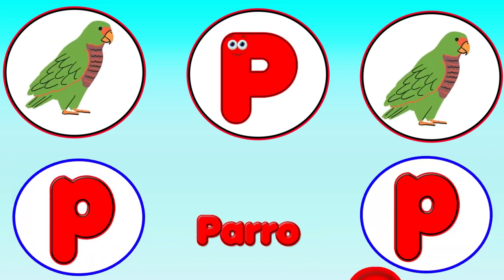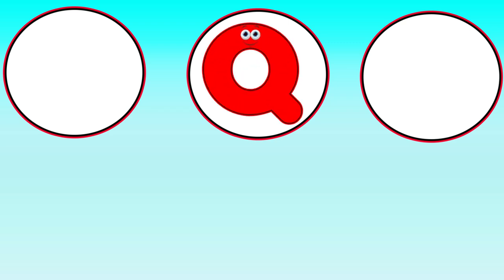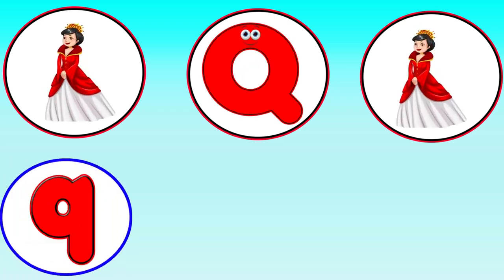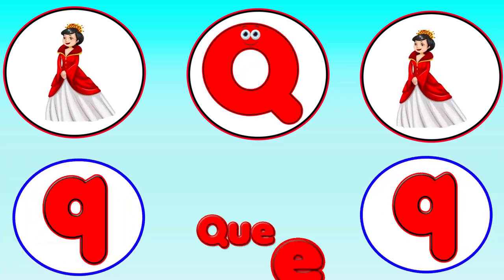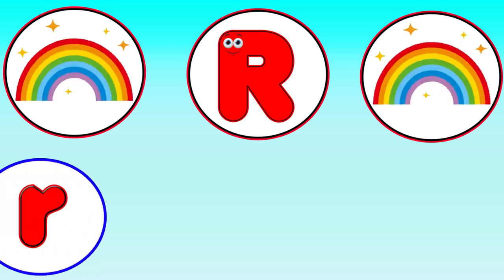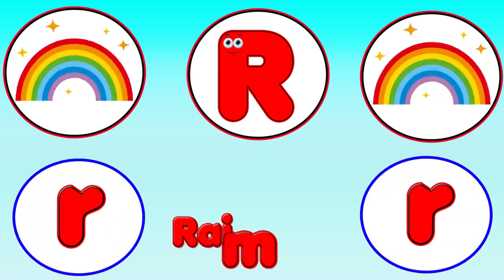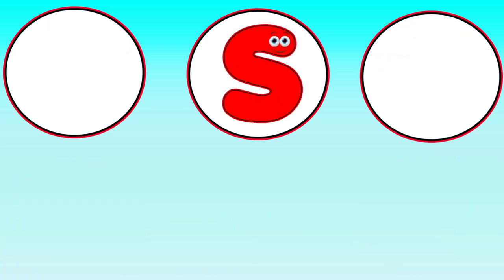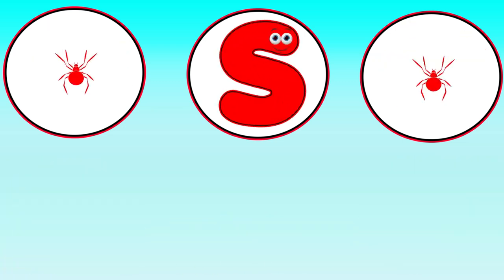P is for Parrot. Pa, Pa, Parrot. Q is for Queen. Queen. R is for Rainbow. R, R, Rainbow.